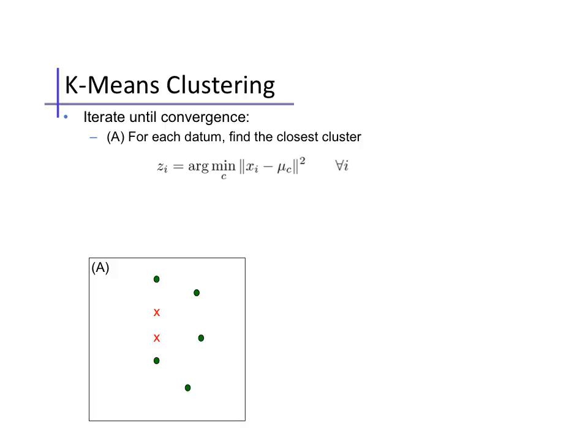To run k-means, we start by initializing the cluster centers μ to some locations. We'll discuss initialization in more detail later. K-means then proceeds by iterating over two steps. First, for each data point, we find the closest cluster center. So z_i takes on the value c that minimizes the distance between point x_i and the cluster center μ_c. In this plot, for each data point, we decide which cluster center to assign it to. We can visualize that with arrows. For instance, this data point's assignment is to cluster 1, this one also, while this data point's assignment is to cluster 2.